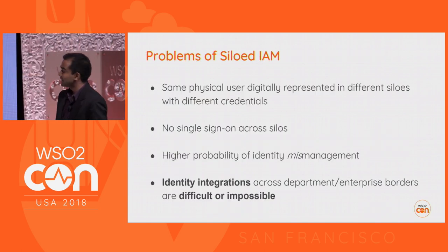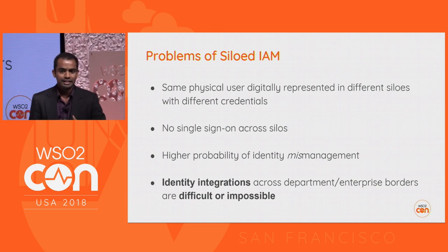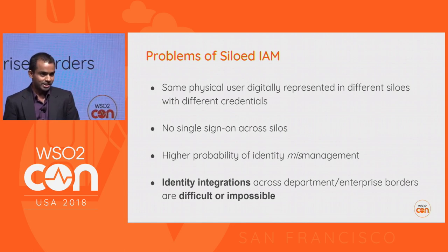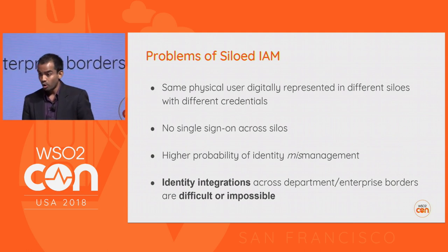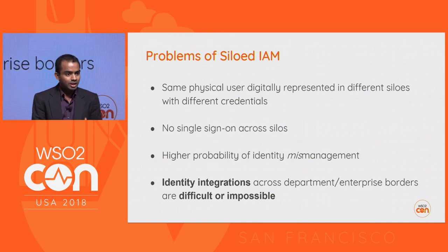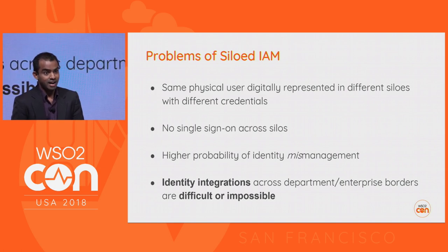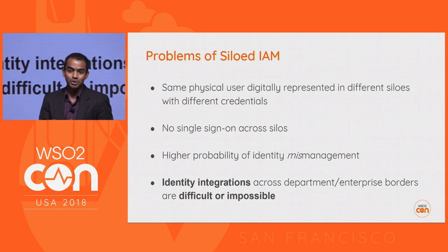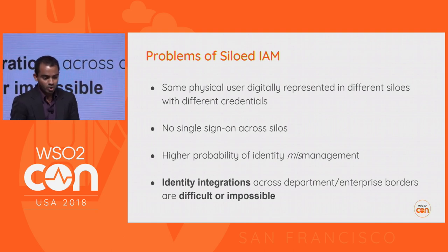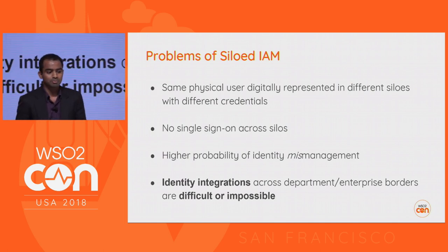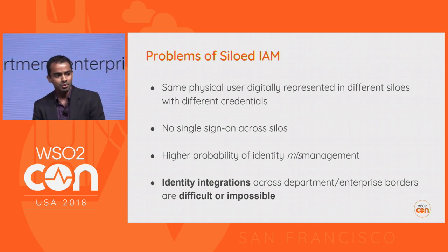These are the key problems in a siloed IAM setup. The same physical user is digitally represented across different silos, needing different credentials each time they log in — there's no single sign-on, even within the workspace itself. There's a higher probability of identity mismanagement, as developers must secure and maintain identity rather than concentrating on business logic. And most importantly, it is difficult or sometimes impossible to make integrations across department or enterprise borders.